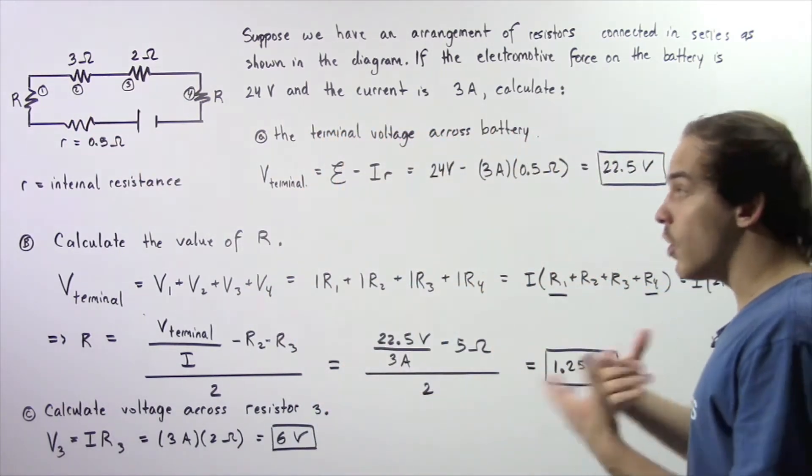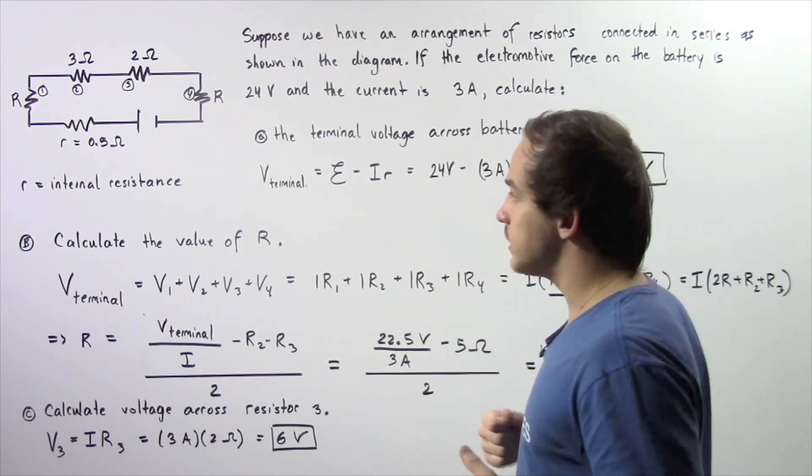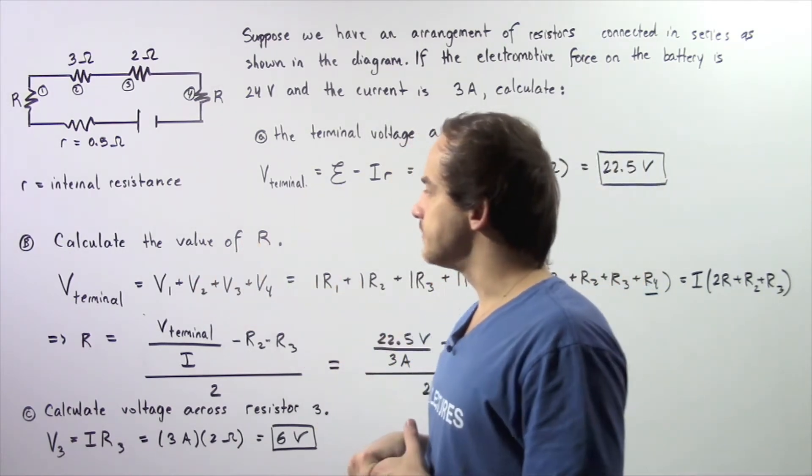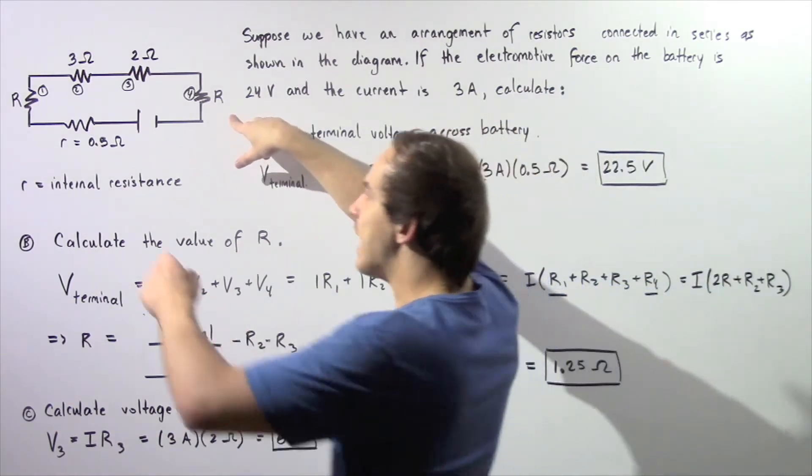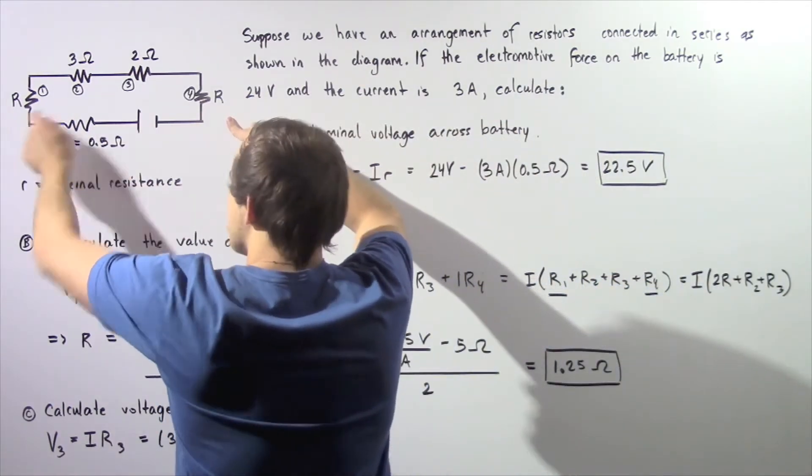So now knowing our voltage, the terminal voltage, let's move on to part B. We want to calculate the value of R.